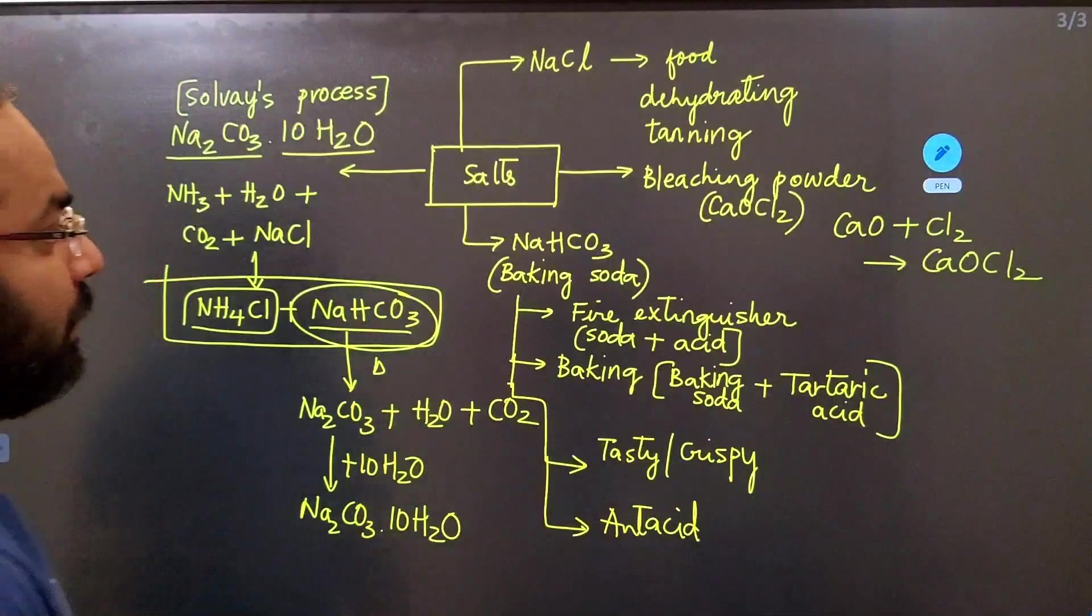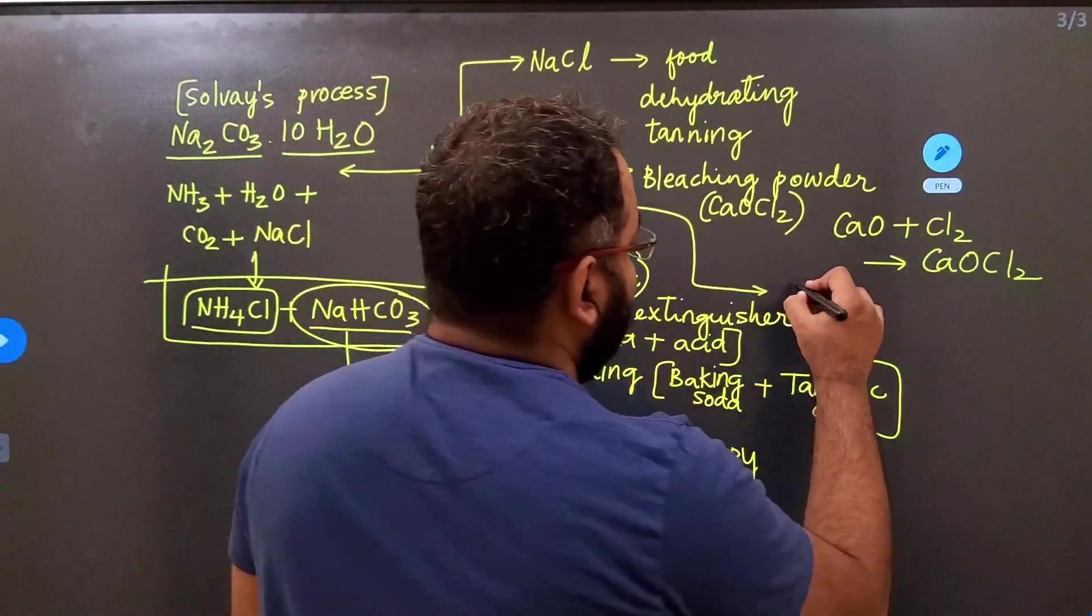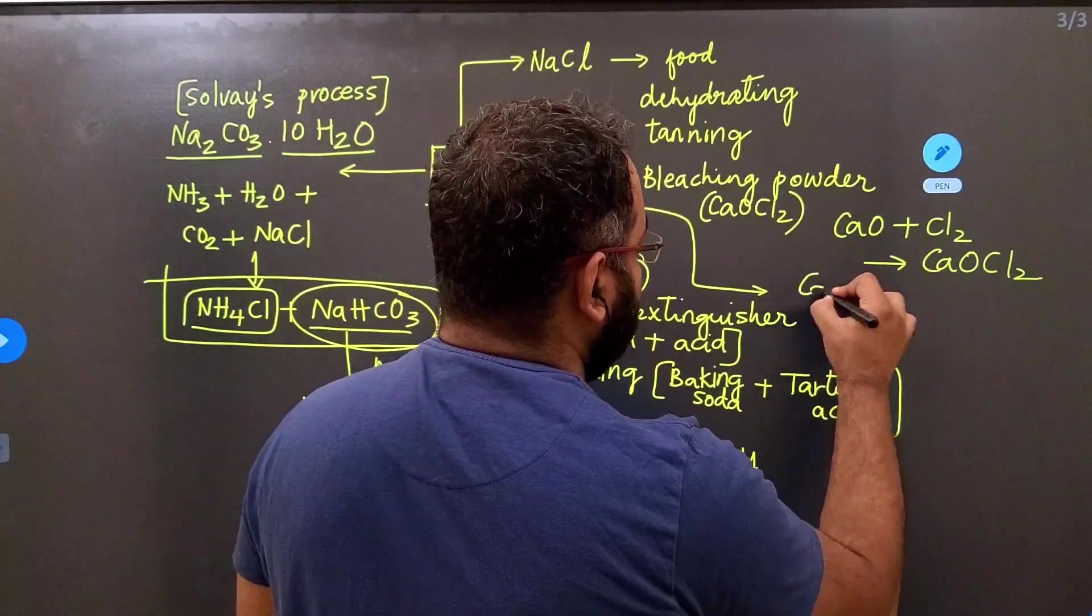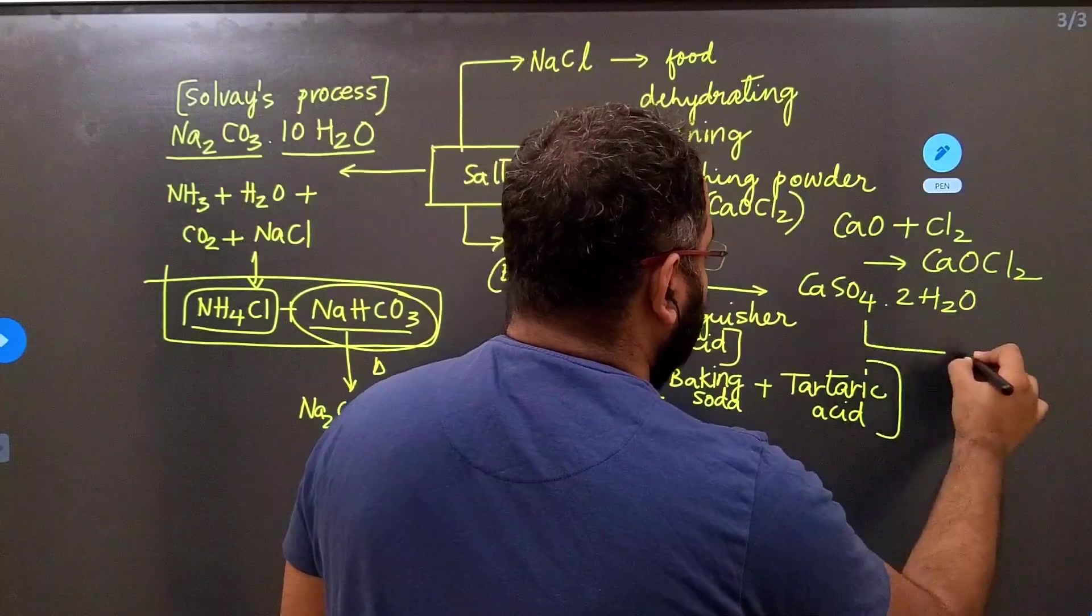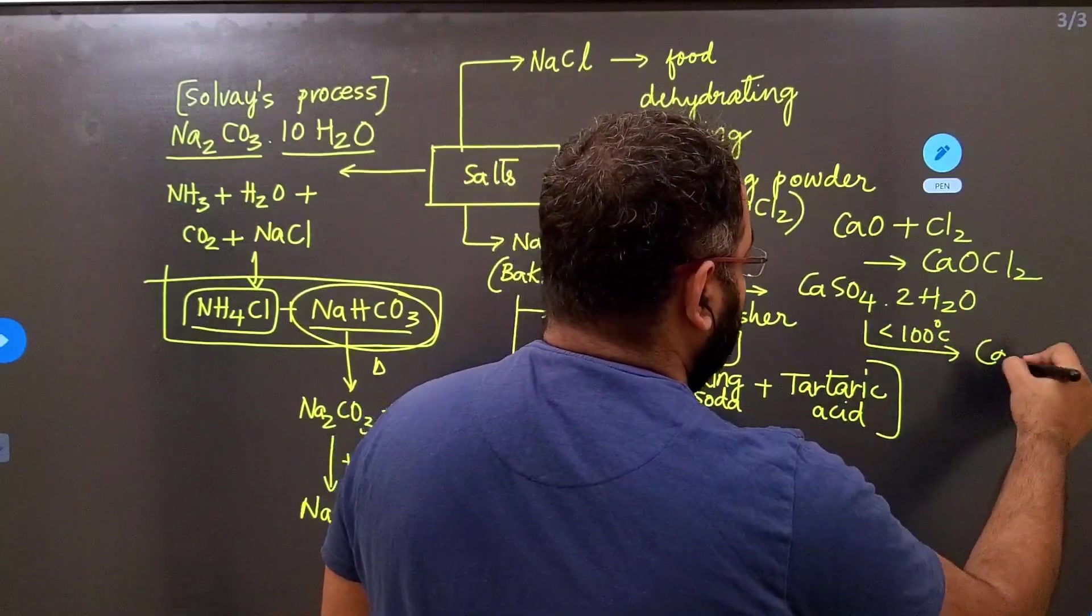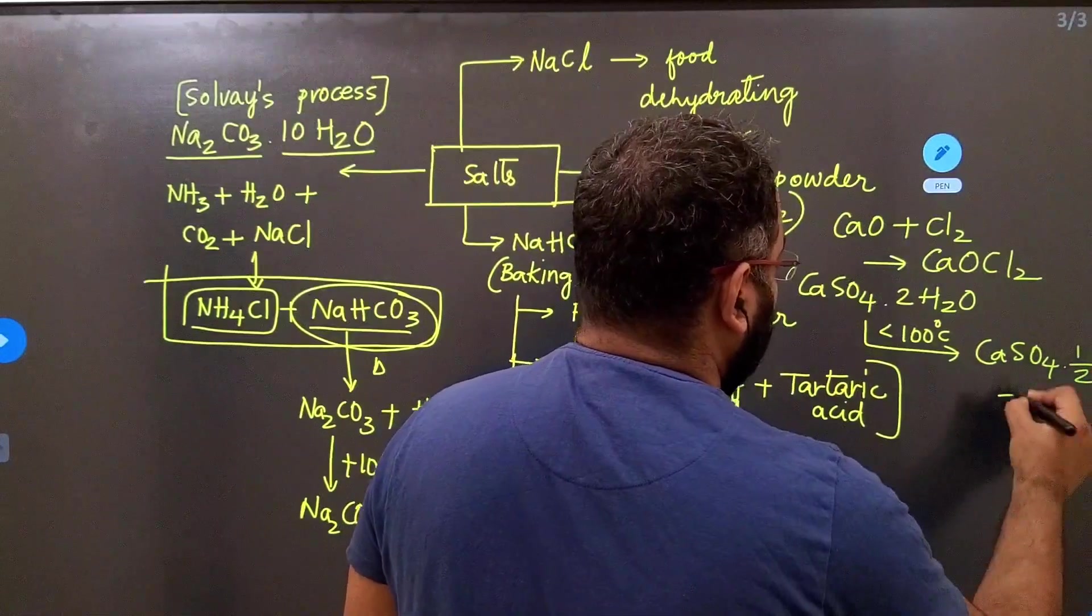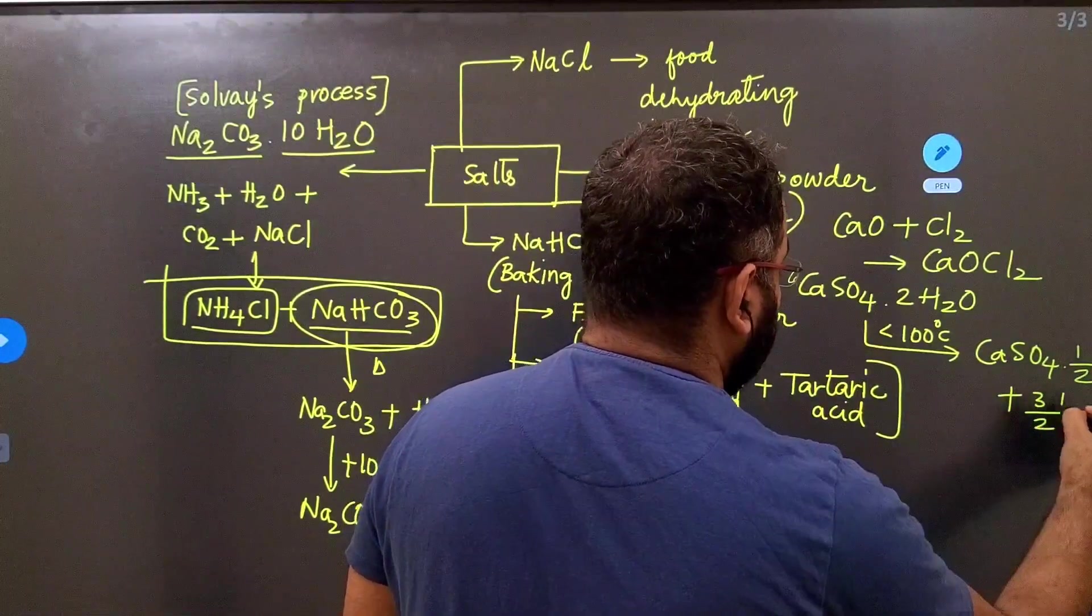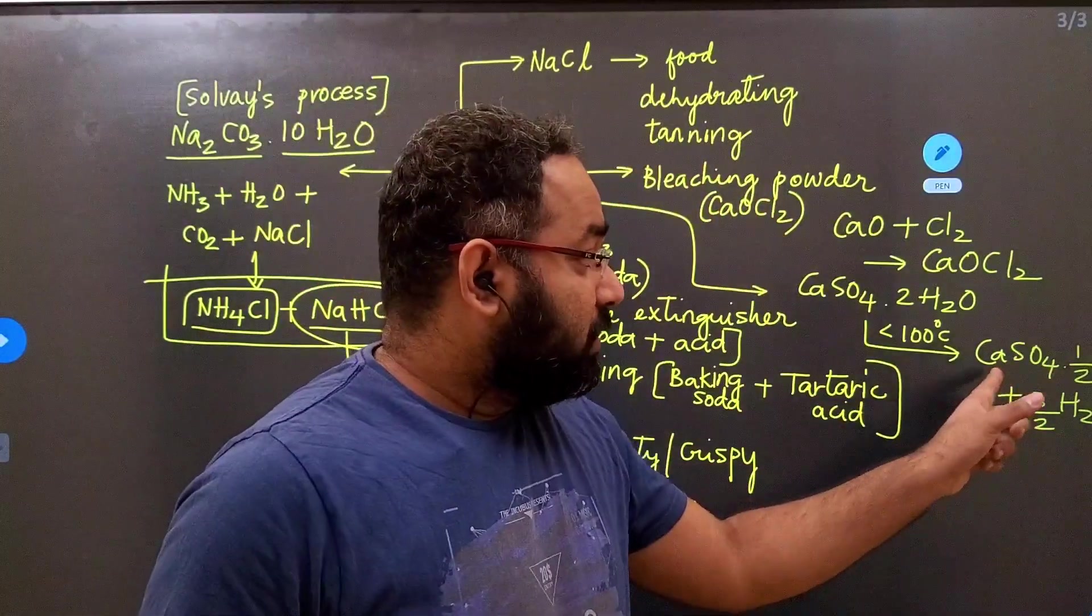The last major salt that we have to remember is plaster of Paris. Plaster of Paris is obtained from gypsum. Gypsum is CaSO4·2H2O. Please make sure that you heat it to a temperature less than 100 degrees Celsius. When you do that, you get CaSO4·½H2O plus 3/2 H2O.